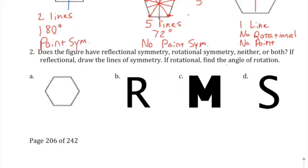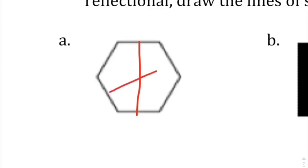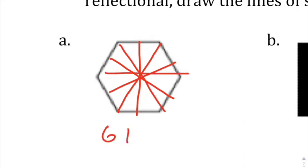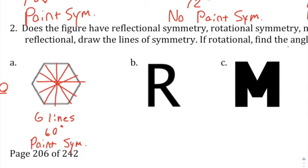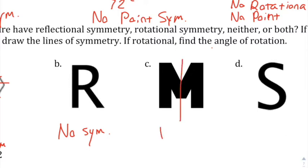For a regular hexagon: going side to side and vertex to vertex gives six lines of symmetry. Rotational symmetry is 360 divided by 6, which is 60 degrees. You can add 60 three times to reach 180, so it also has point symmetry. For the letter R, there's nowhere you can draw a line and no rotation works — no symmetry at all. For the letter M, you get one line of symmetry going down the middle. Rotating 180 degrees makes a W, not an M, so just one line of symmetry.